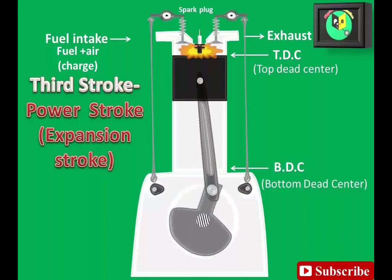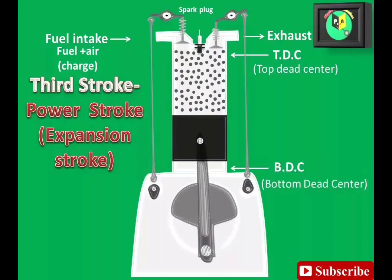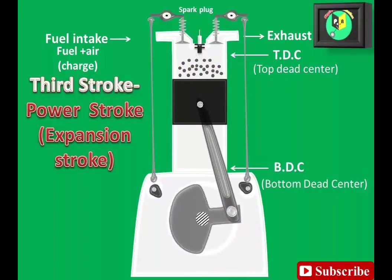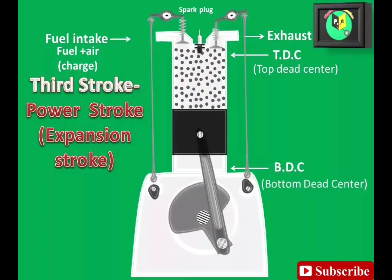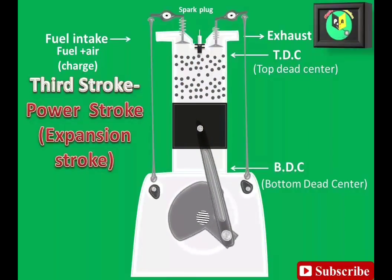During this stroke, piston moves from TDC to BDC. This stroke is known as power stroke as work is done during this stroke. The exhaust valve opens as the piston reaches BDC position and pressure falls suddenly to atmospheric pressure at constant volume.